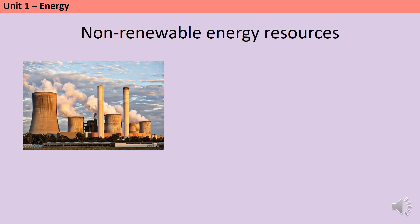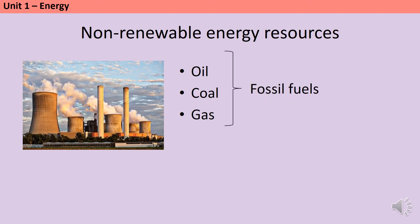Electricity can be generated from four different non-renewable energy sources. Crude oil, coal, and natural gas are all examples of fossil fuels, formed over millions of years from ancient biomass. We can also generate electricity using radioactive metals such as uranium and plutonium.